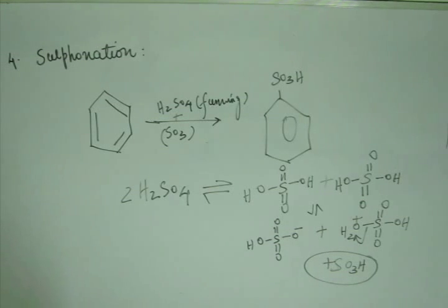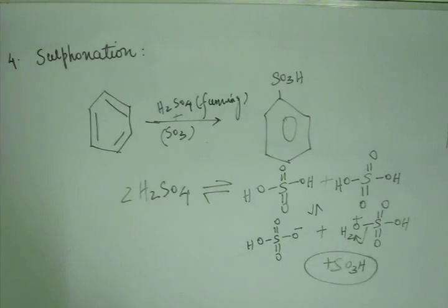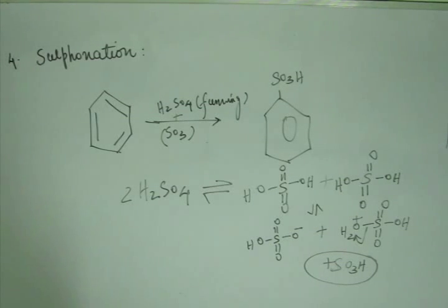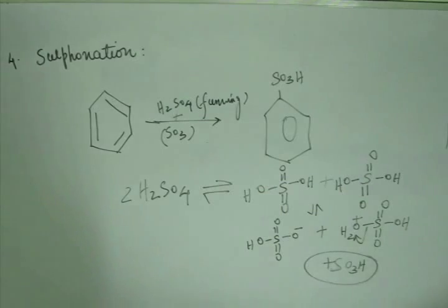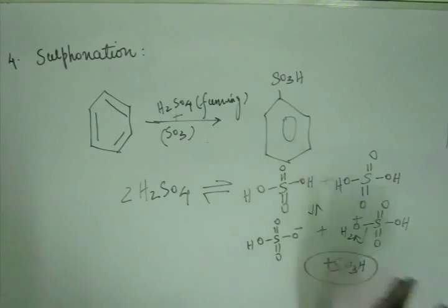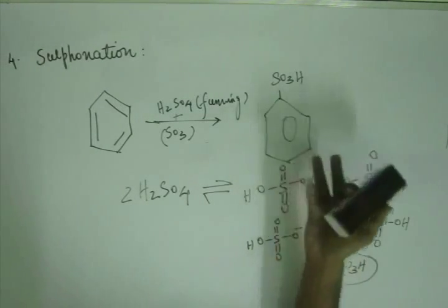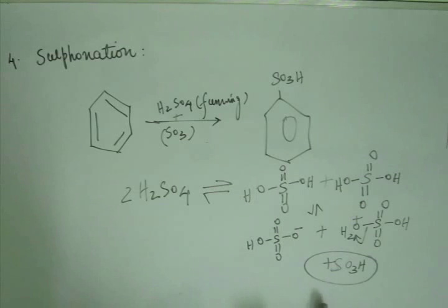The mechanism is the same as we have seen before. A sigma complex is formed, which undergoes resonance, and finally aromaticity is regenerated. The sulfonyl ion is added to benzene, giving us benzene sulfonic acid.